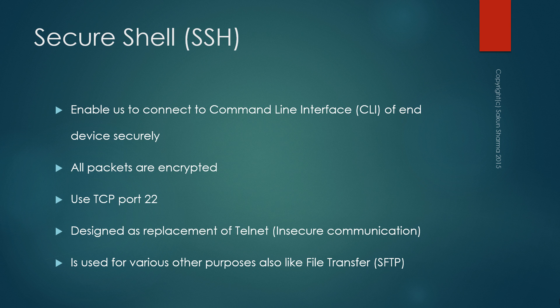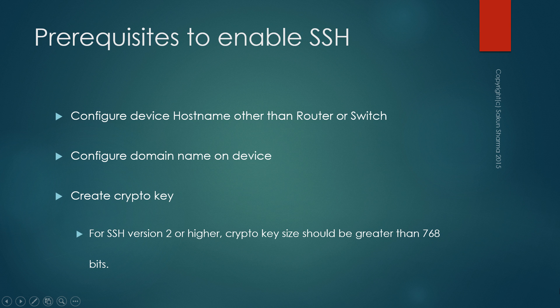SSH is a protocol which uses the transport layer protocol TCP and works on port 22. SSH is basically used to secure communication between two end devices, so we use SSH to connect to remote devices for command line interface. We have another protocol called telnet, but the problem with telnet is your communication is insecure because every packet is in plain text — it's not encrypted. Whereas with SSH, all packets are encrypted. We also use SSH for other purposes like file transfer services with FTP, and SCP protocol which also uses SSH for encryption.